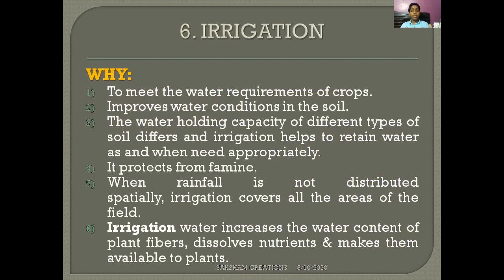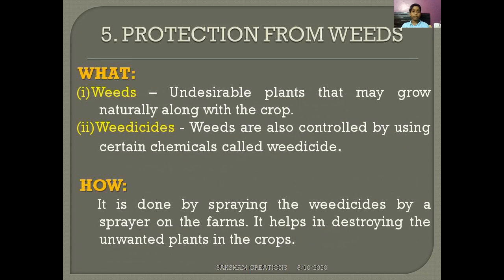Why is irrigation important? First, to meet the water requirements of crops. Second, to improve water conditions in the soil. Third, the water-holding capacity of different soils differs, and irrigation helps retain water as needed. Fourth, it protects from famine. Fifth, when rainfall is not distributed evenly, irrigation covers all areas of the field. Sixth, irrigation water increases the water content of plant fibers, dissolves nutrients, and makes them available to plants.